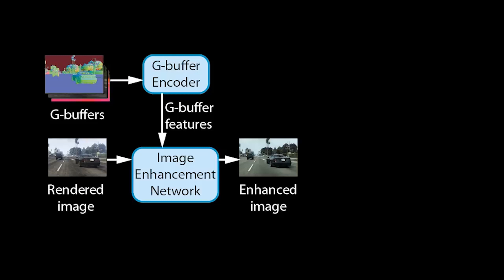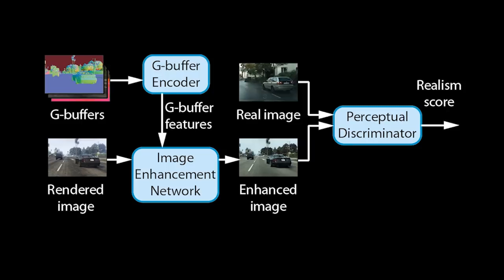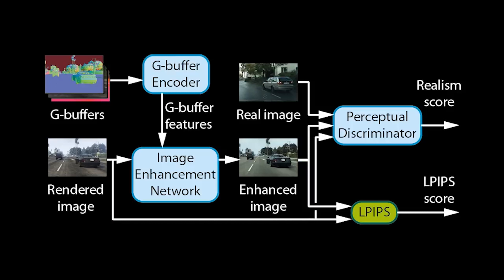To train our networks for enhancing realism, we employ a perceptual discriminator. For each image it takes in, it produces a realism score. To make it understand what the real world looks like, we also feed it real photos. To ensure that our networks retain the structure of rendered images, we further add them to the discriminator inputs and employ a perceptual loss.